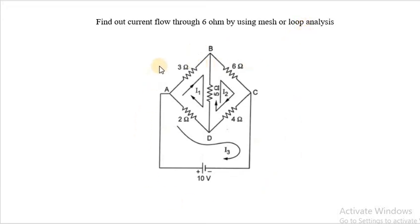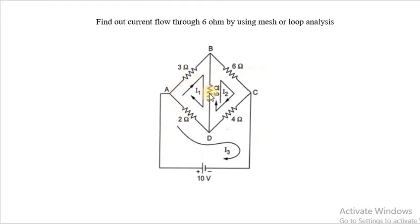The network has three loops. The first loop is A, B, D and A, having resistances 3 ohm, 5 ohm and 2 ohm, which gives the first closed path. This is loop number 1, and loop number 1 carries loop current I1 in the clockwise direction.